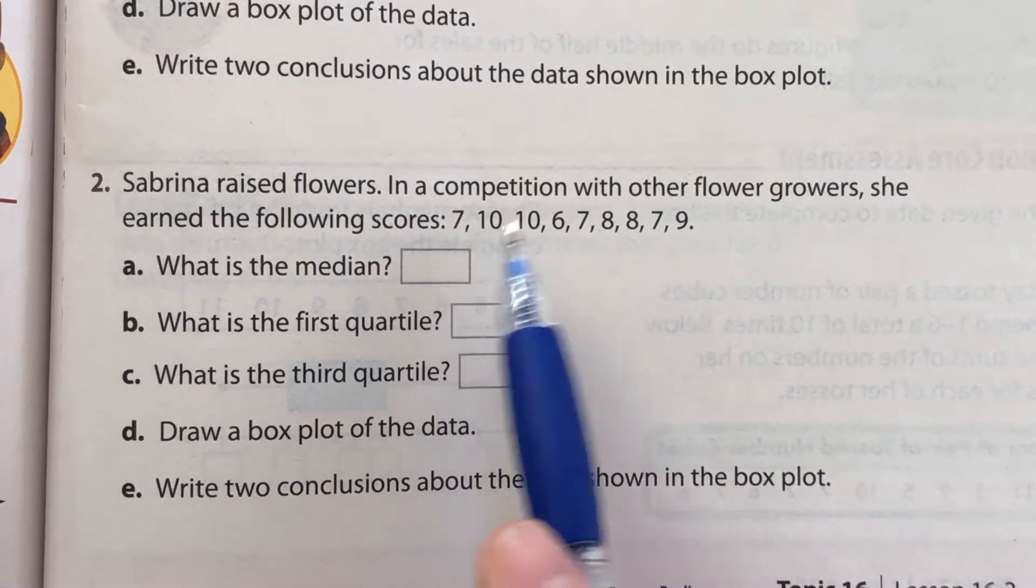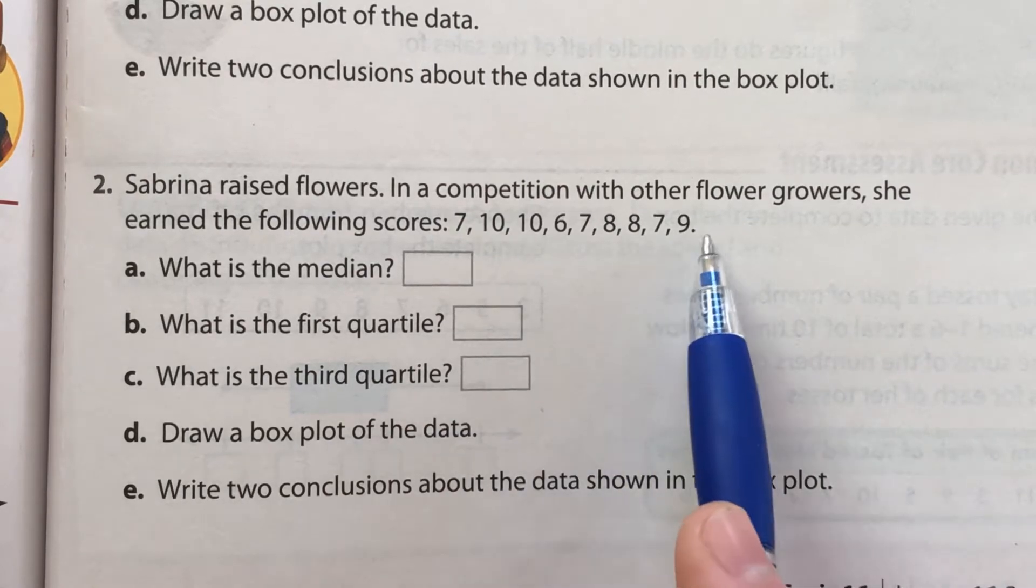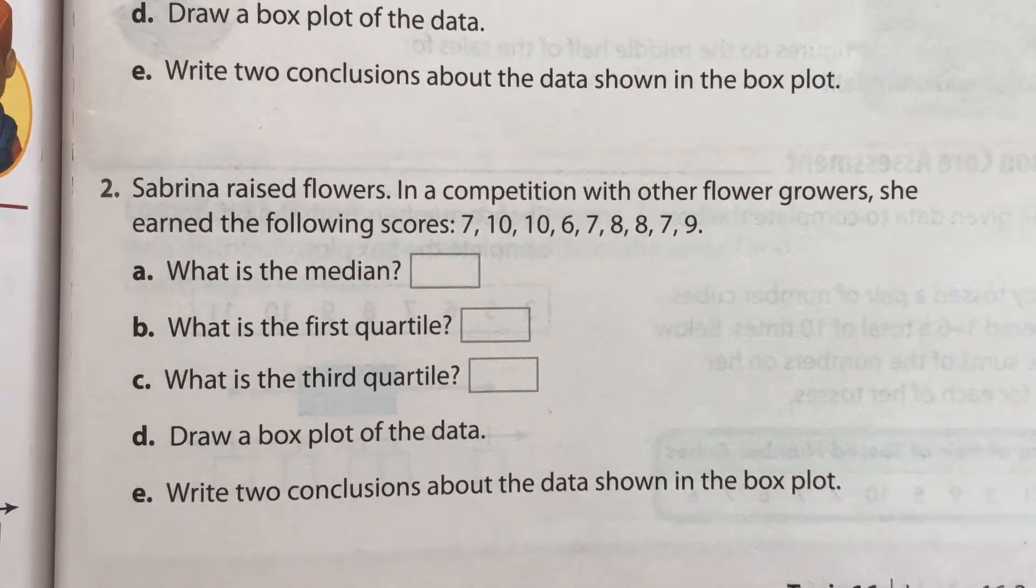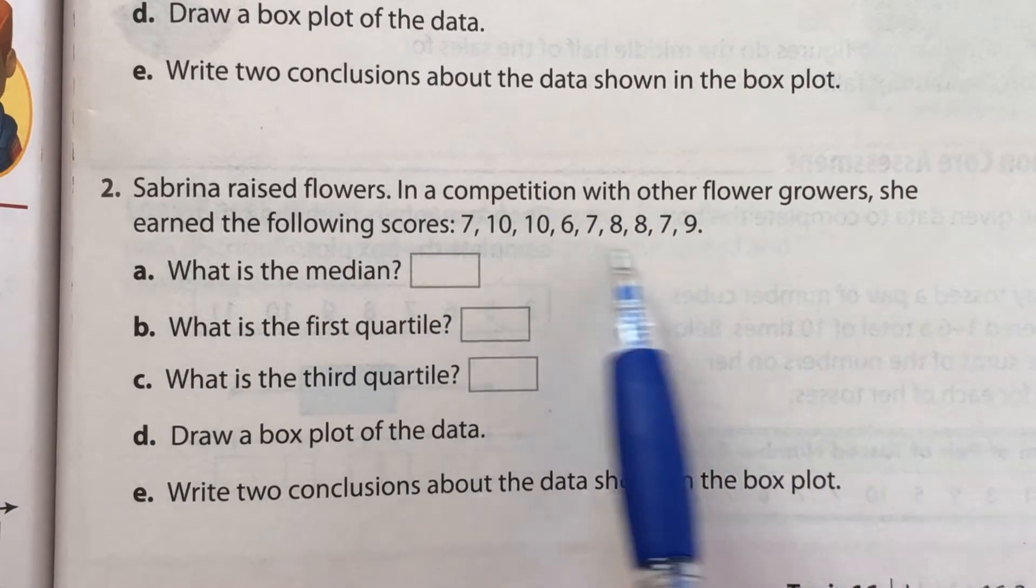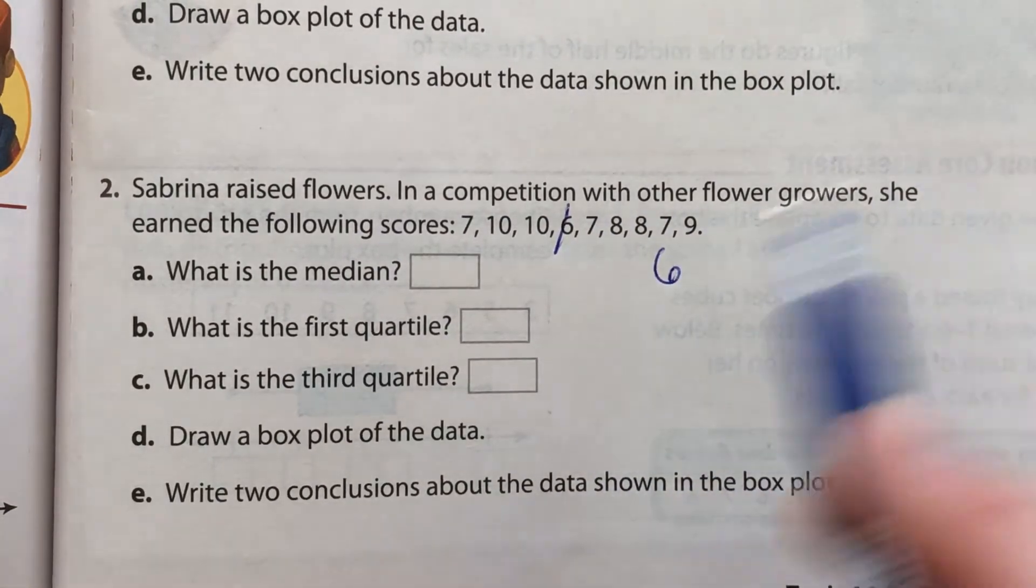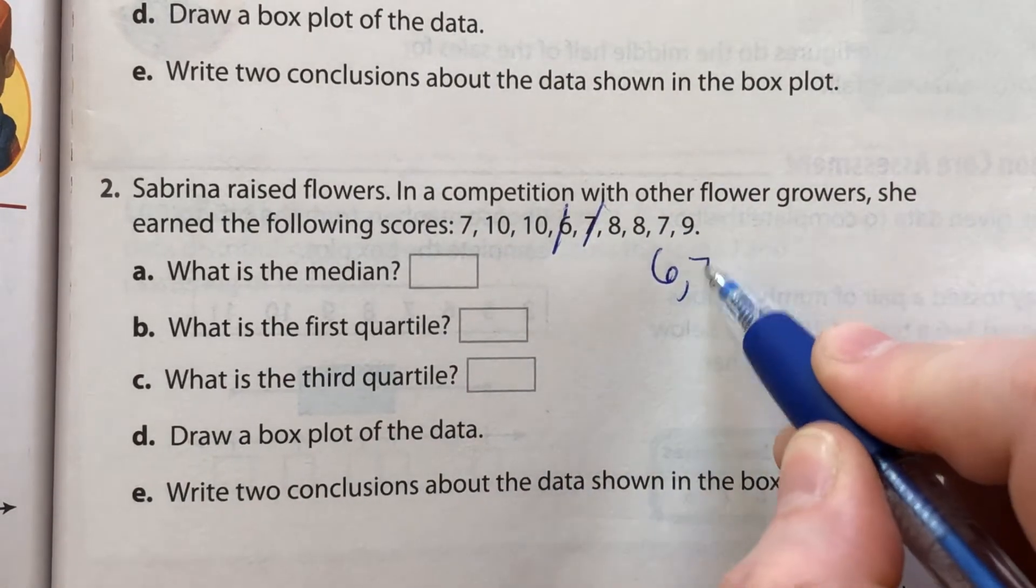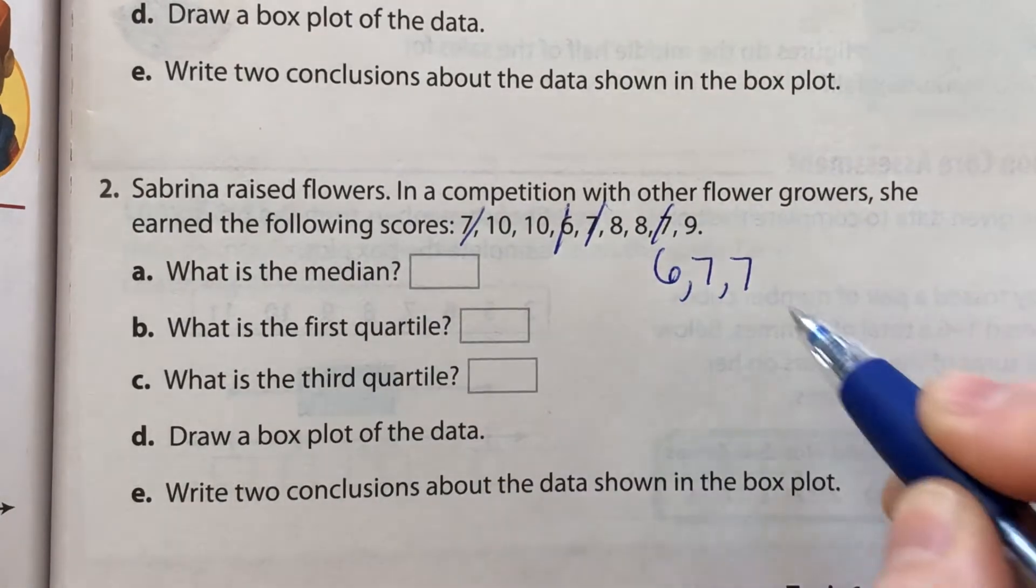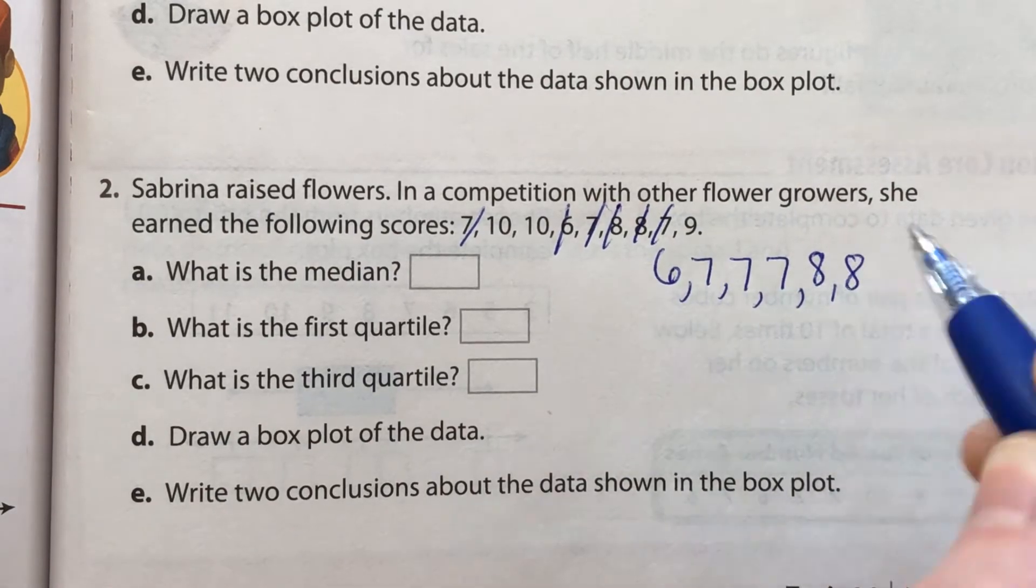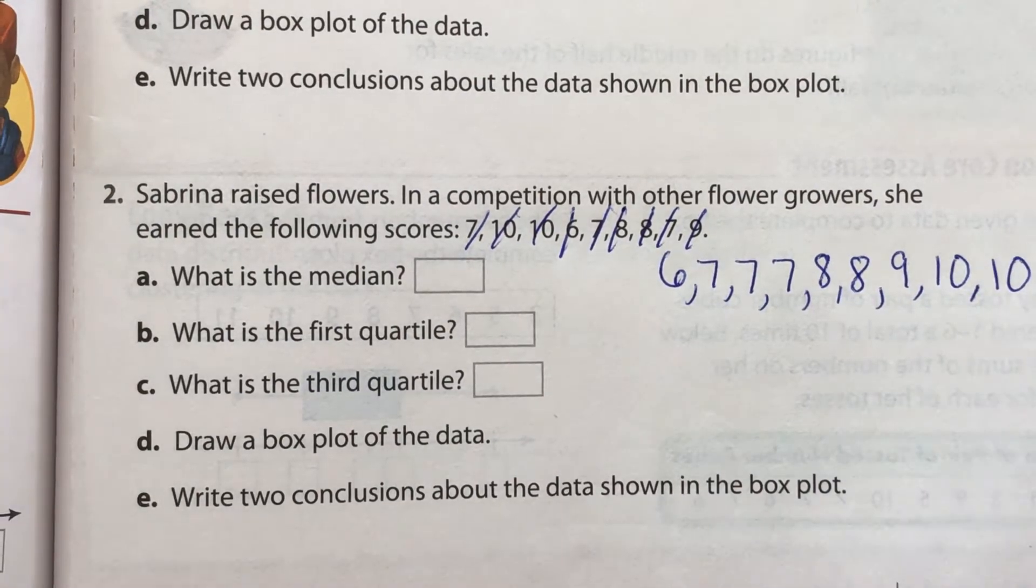She earned the following scores: 7, 10, 10, 6, 7, 8, 8, 7, 9. That's her data. So part A is what is the median. Well, in order to find the median, we have to order these numbers from least to greatest. So the lowest number is a six. And I'm crossing these out so I don't repeat numbers. Then we have a seven, another seven, another seven, two eights, a nine, and then two tens.